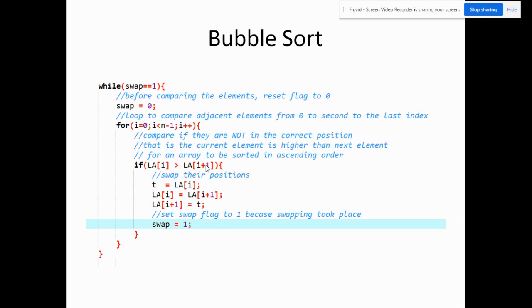If that is not the case and the element with the lower index is higher than the next element, they don't have the correct positions, so we swap them. We place one element in a temporary variable, replace that element with the value of the other element, then place the temporary variable into the other element. This swaps the values of la[i] and la[i+1]. Since swapping was done, we set swap equal to 1. This repeats until the second-to-last element, and the whole outer loop repeats until swap is no longer equal to 1.